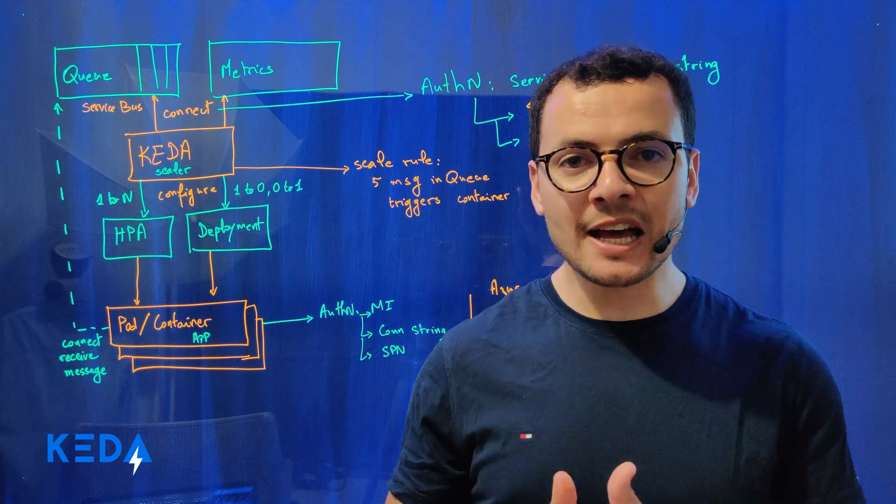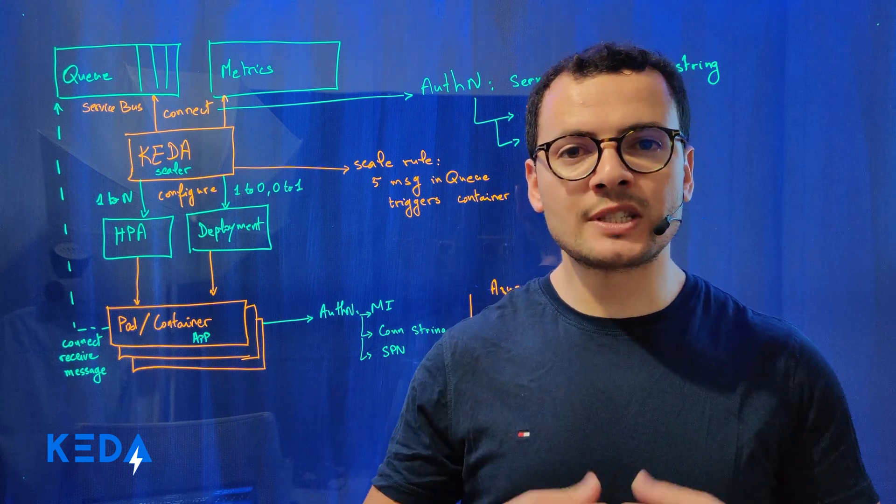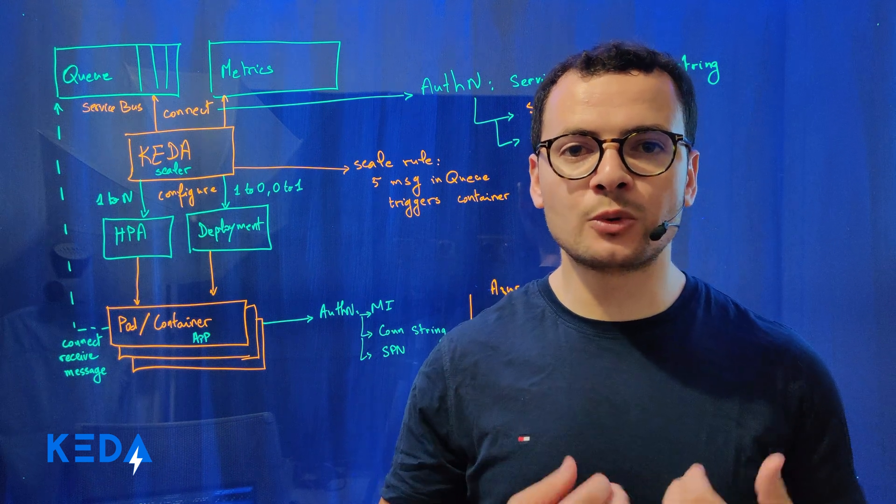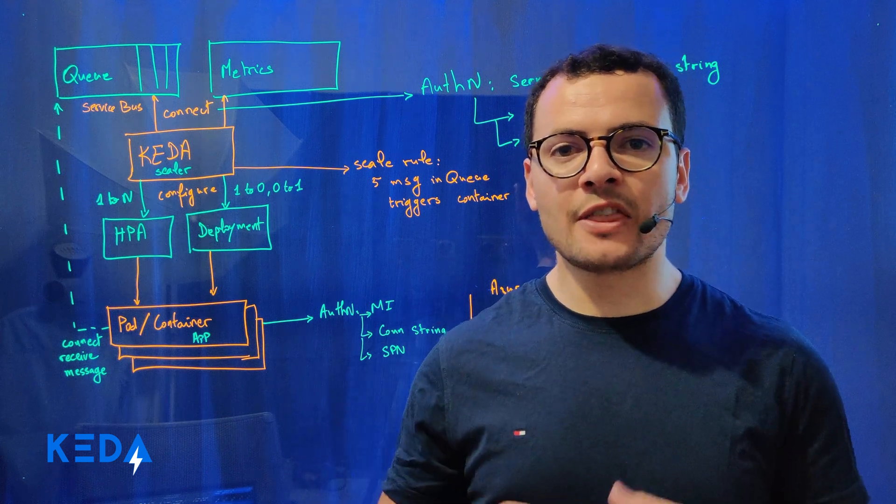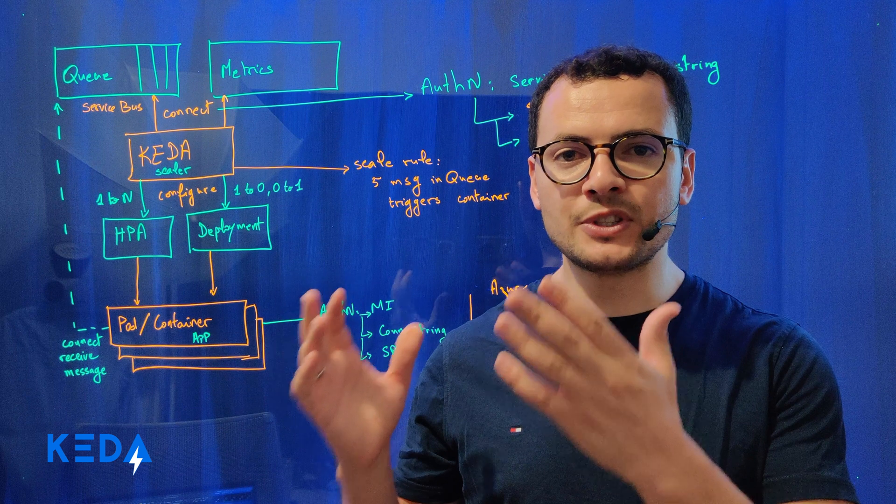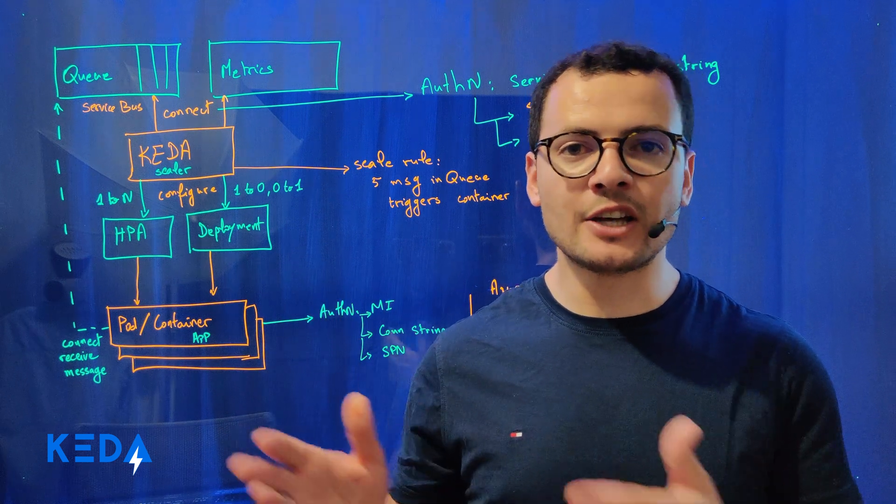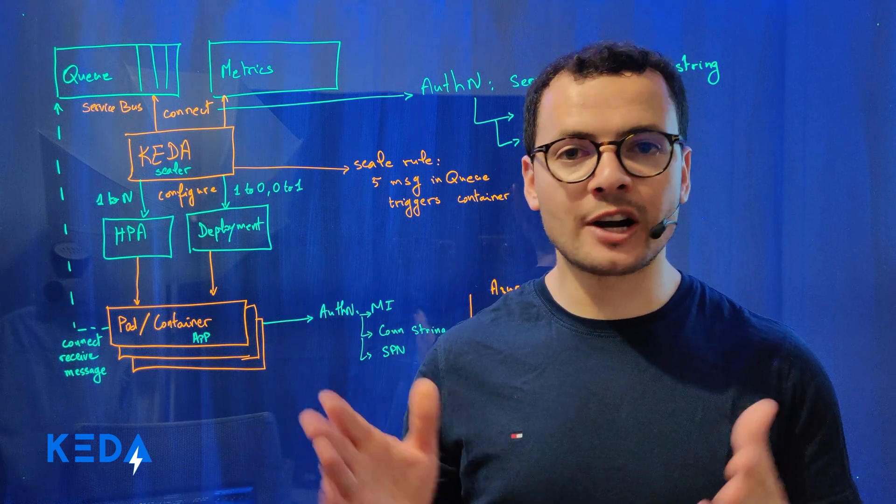But with KEDA, we can extend that system to use external metrics or event triggers that could be based on message queues, for example, like Azure Service Bus, Kafka, or RabbitMQ.